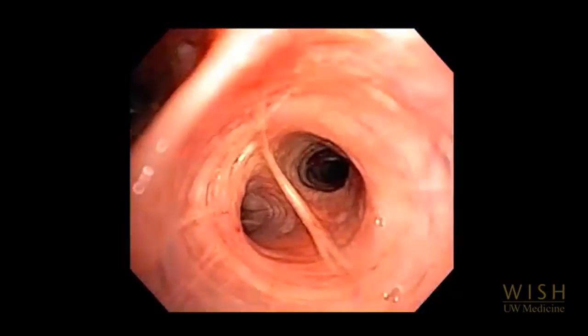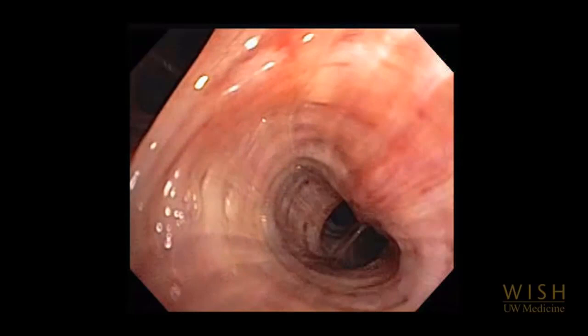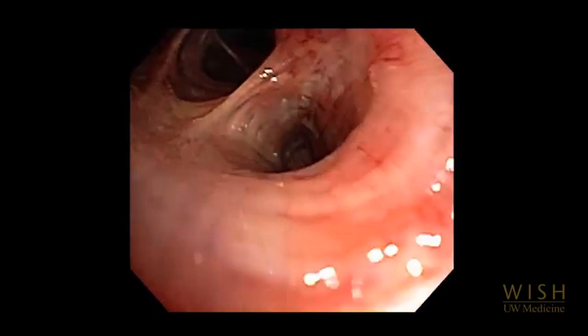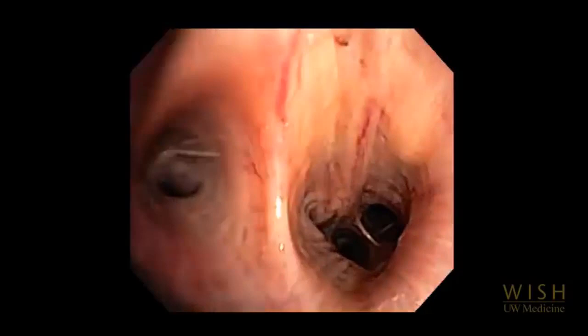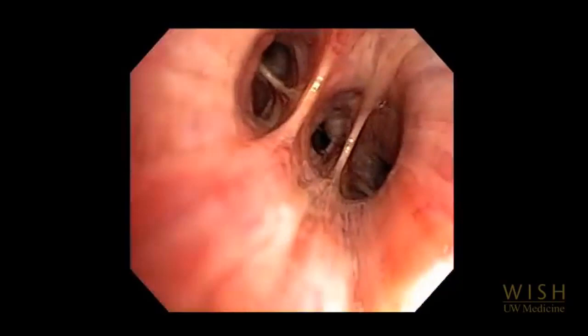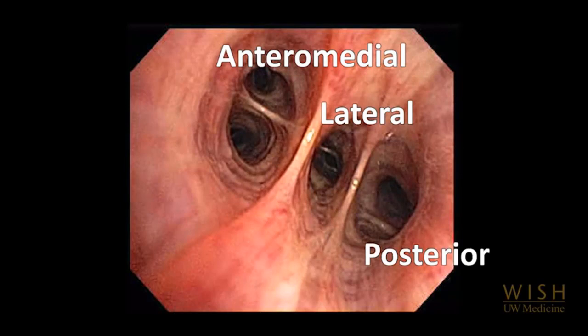The left lower lobe superior segment bronchus takes off posteriorly just below the level of the left upper lobe bronchus. The subsegment can be difficult to enter. The left lower lobe bronchus then divides into anteromedial, lateral, and posterior segments, forming the mnemonic ALP when the bronchoscope is held in anterior-posterior orientation in the left lower lobe bronchus.